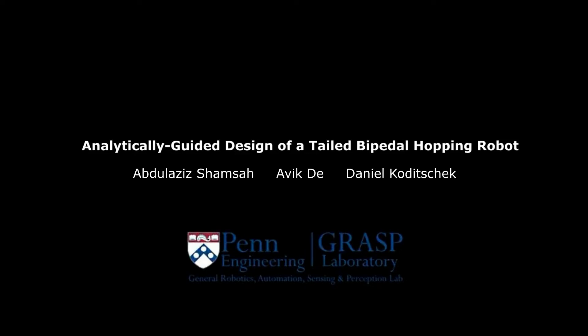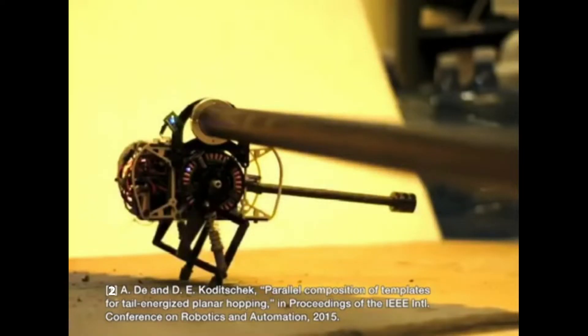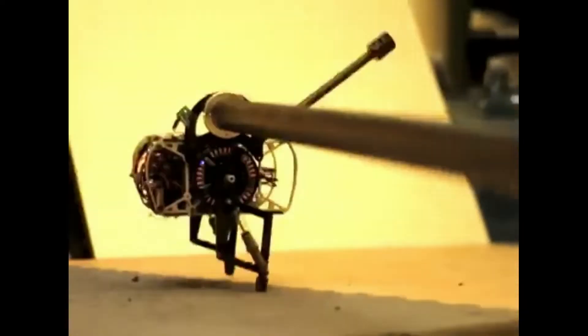The Bent Jerboa is an underactuated hopping robot that uses the tail to inject energy into light springs. Previously, the Jerboa has demonstrated steady planar hopping.